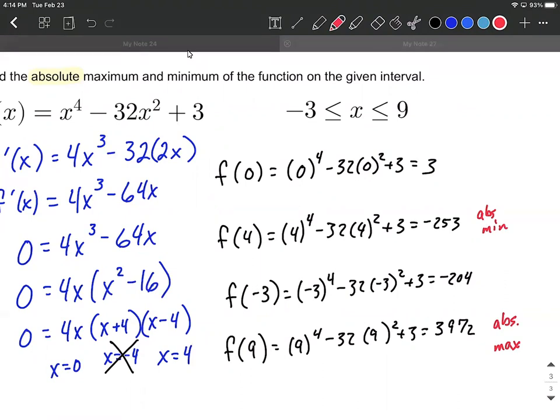All right, just to be clear about the terminology here, the absolute minimum is negative 253. It occurs at an x value of 4. Same idea with the absolute maximum. The absolute maximum is 3,972. It occurs at 9.